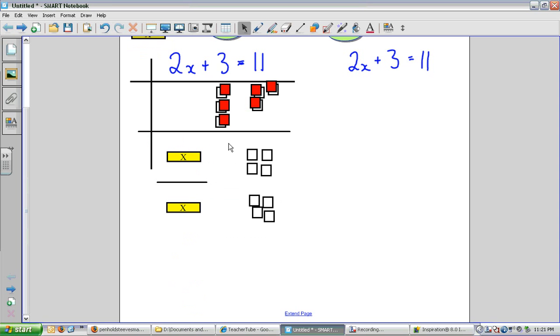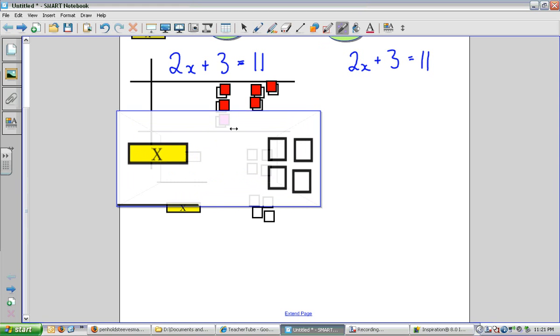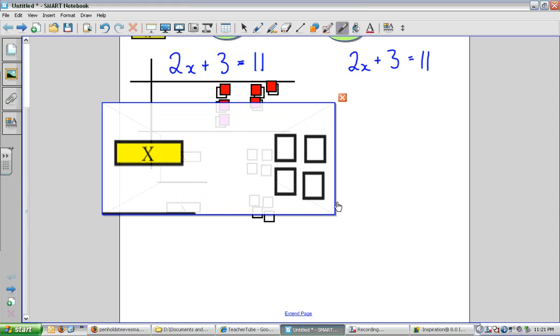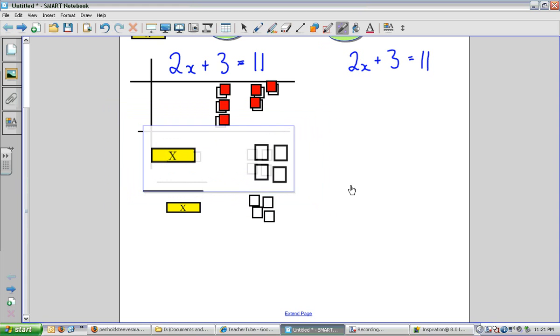I've determined x by itself is equal to 4. So in which case, my final answer is this guy right here. So I'm going to make this work. Okay, x is equal to 4 in this case. That is where that is coming from.